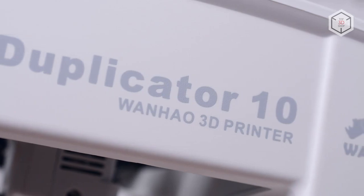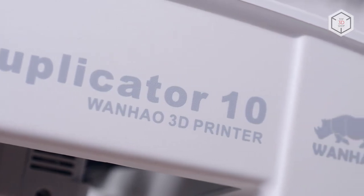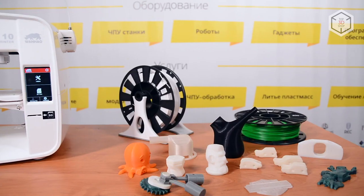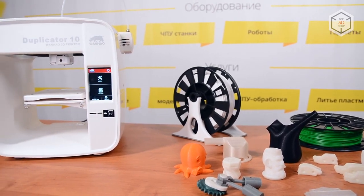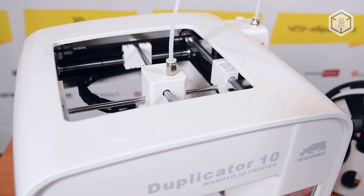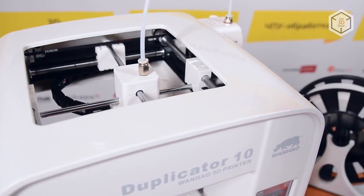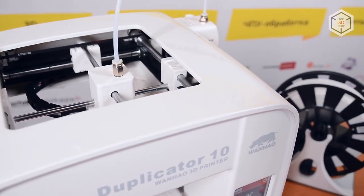All the Wanhao D10 models are fully assembled and ready to use. The printer looks like a toy, but appearances can be deceiving. Under the plastic case, there is a full metal construction, which guarantees high-quality and stable printing.